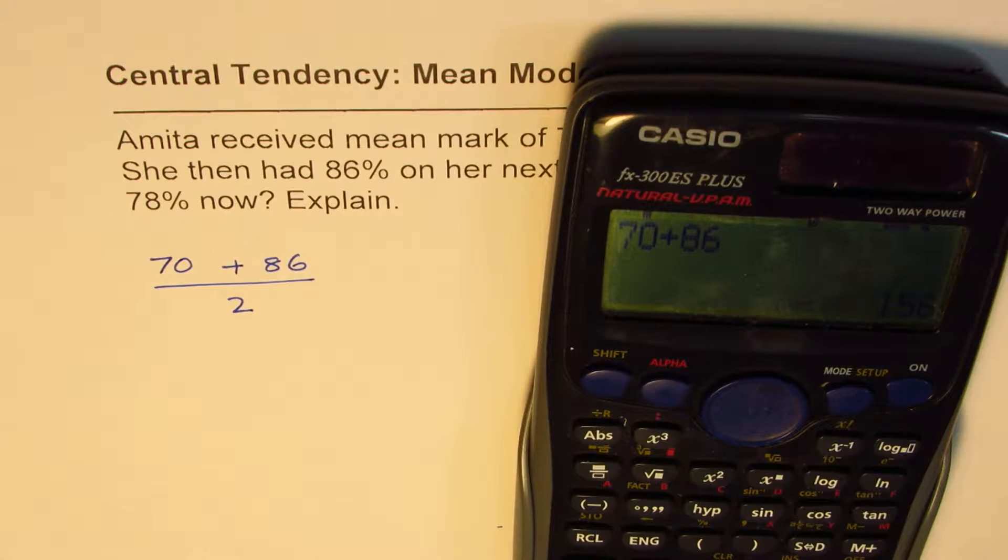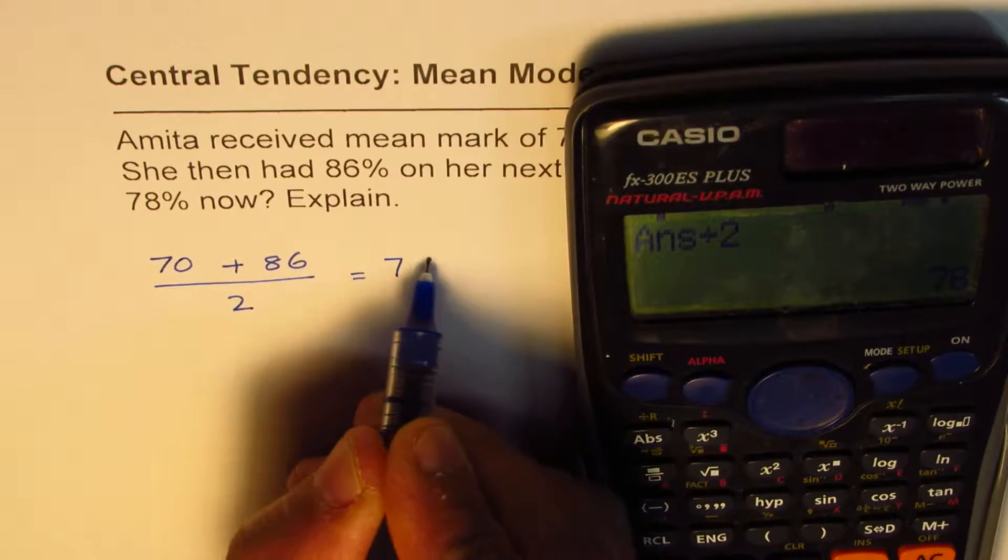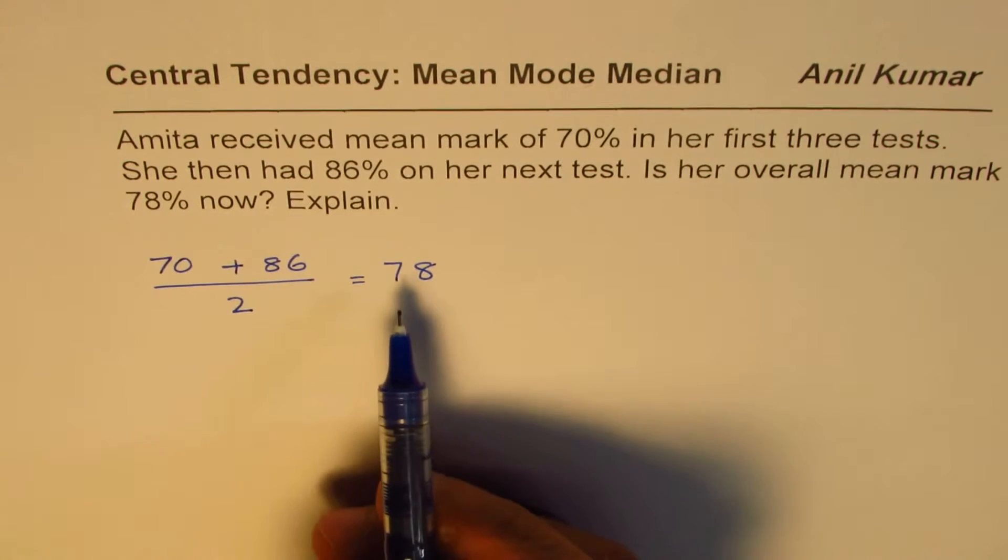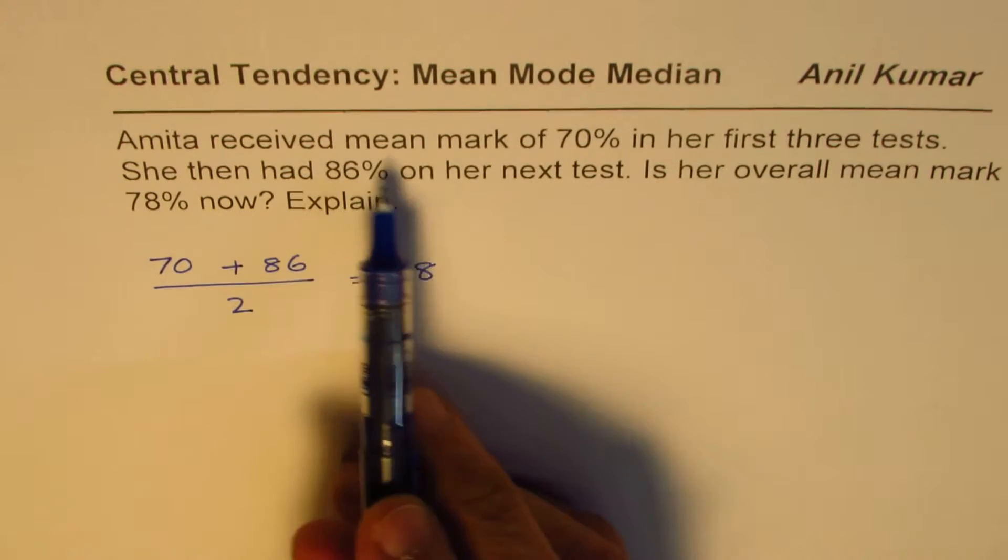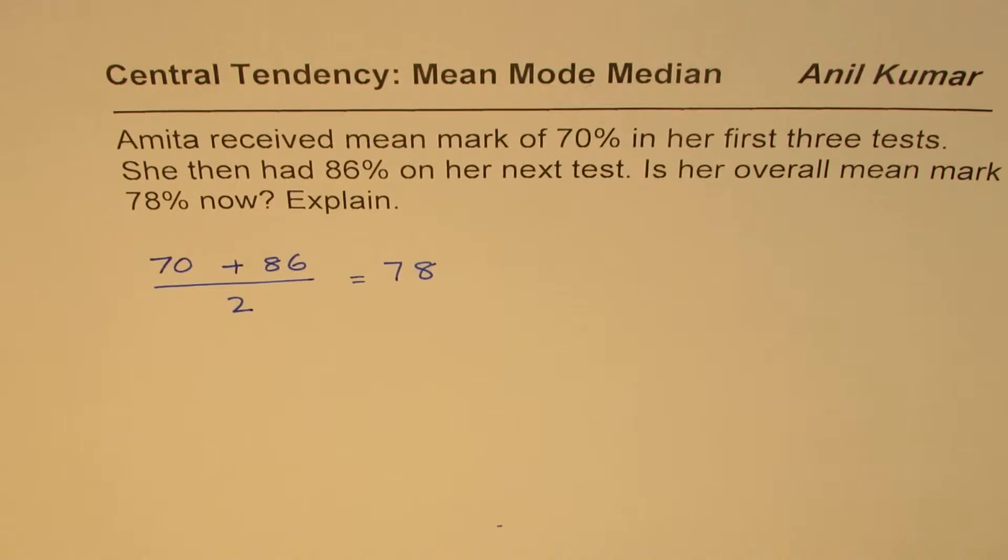And when you divide that by 2, you get 78. So this indeed gives you 78. Now the question is, Amita received mean mark of 70% in her three tests - so that is key.